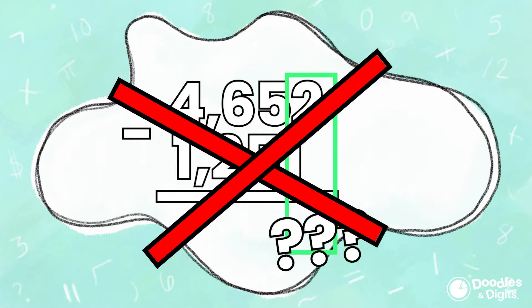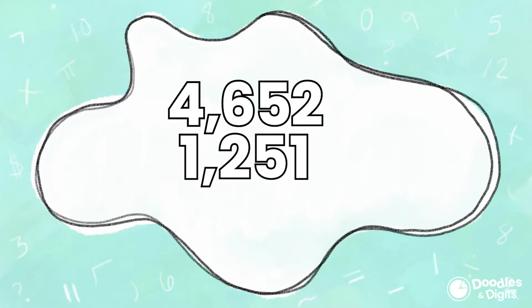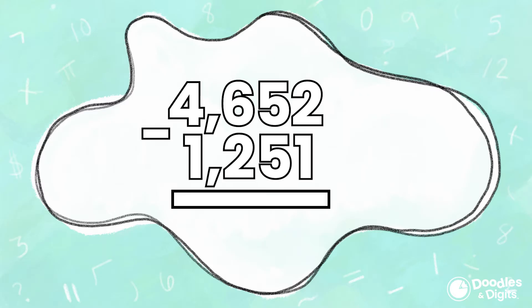So let's try this again, but let's line each place value up: the ones with the ones, the tens with the tens, the hundreds with the hundreds, and the thousands with the thousands. That looks much better. Now we can subtract.